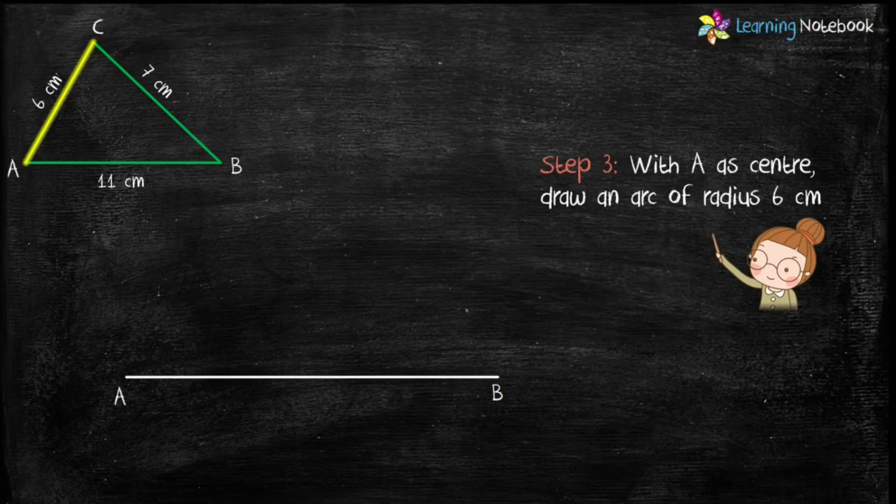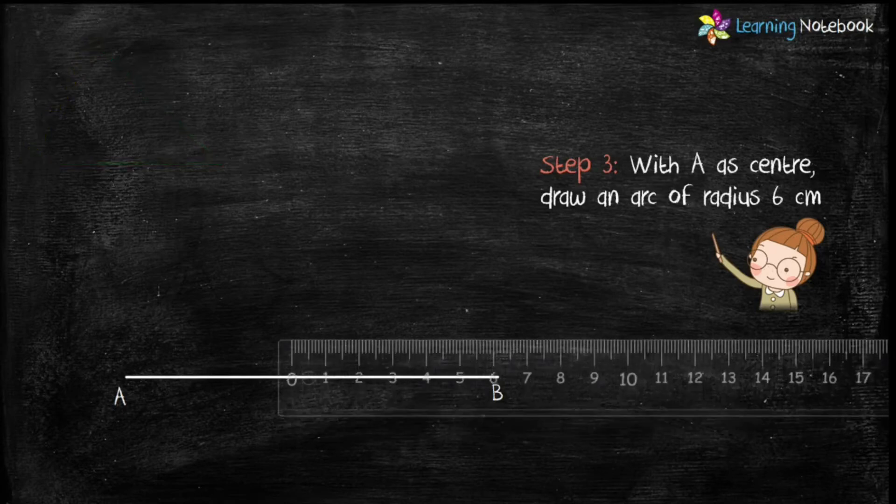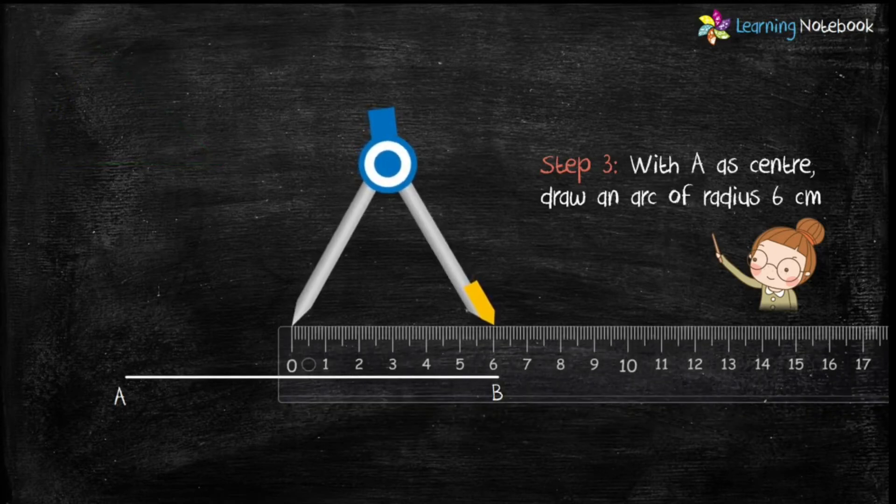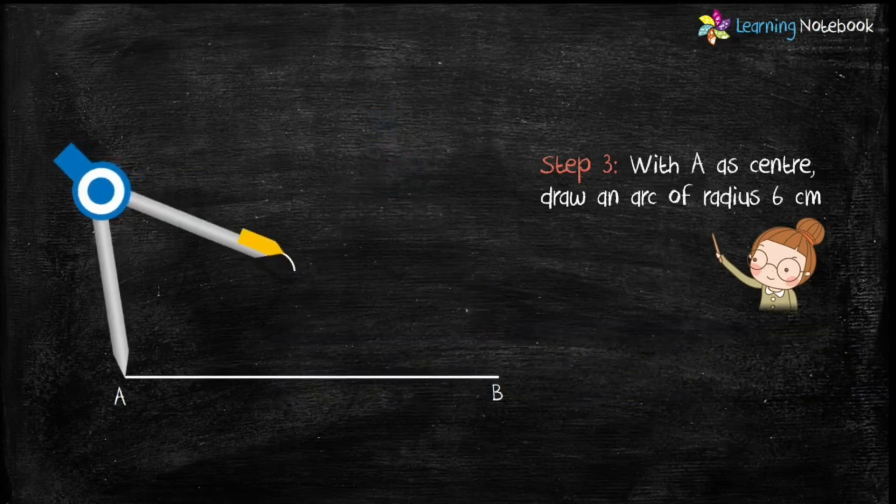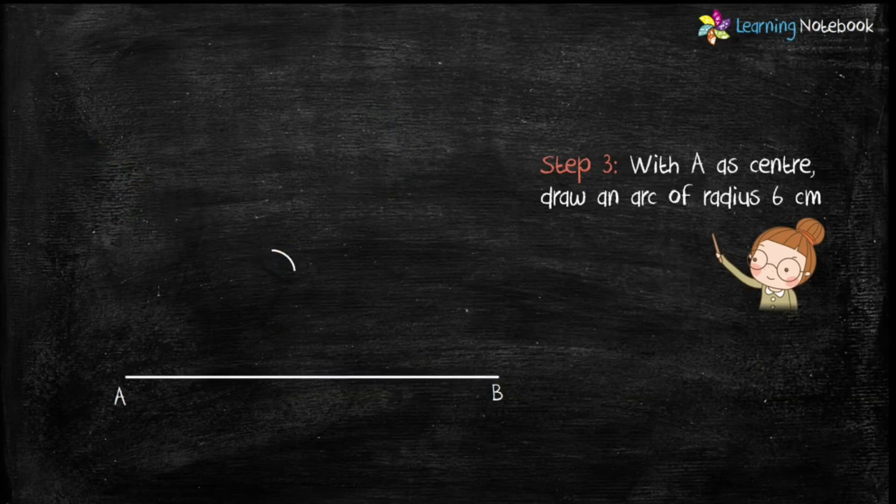Students, to do this step, open the compass with radius 6 cm. Now, place the needle of the compass at point A and draw an arc as shown here.